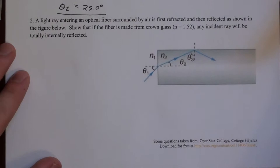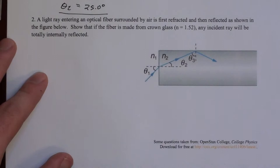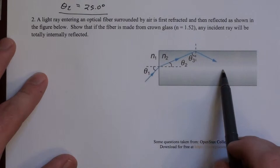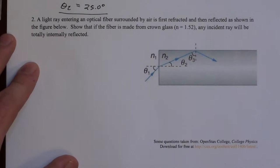Alright, so our second question here says a light ray entering a fiber optic cable surrounded by air first refracts and then is reflected as shown in this figure. So we want to show that if this fiber optic is glass and it's surrounded by air, that any incident ray will be totally internally reflected here.